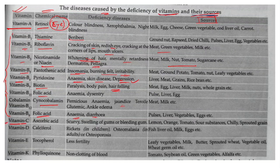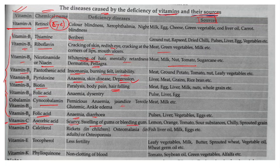Now Vitamin C — there was a question at the beginning about its chemical name. The chemical name of Vitamin C is Ascorbic acid. The deficiency disease is Scurvy, which causes swelling of gums and bleeding of gums. Sources include lemon, orange, tomato, chili, and sprouted grains. Vitamin D — the chemical name is Calciferol — deficiency diseases are Rickets in children and Osteomalacia in adults.